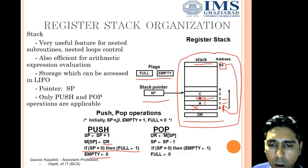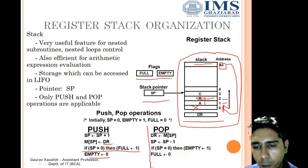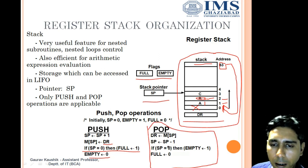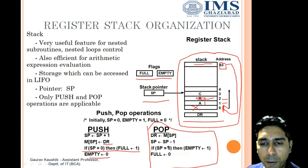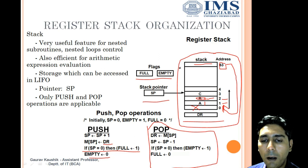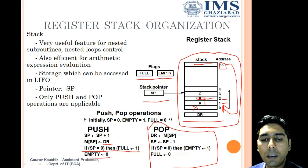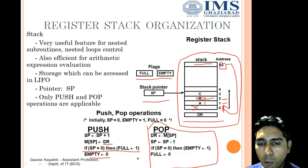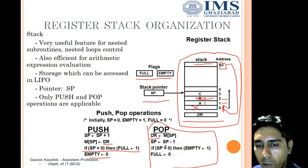Now for the pop operation: the element is popped out from the general purpose registers and provided to DR — the data register. After that, the stack pointer is decremented by one.